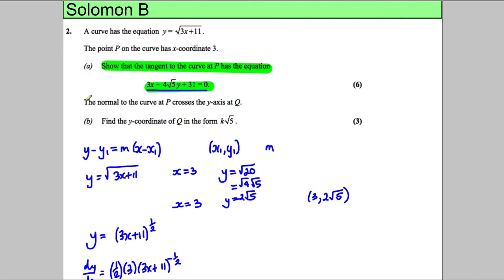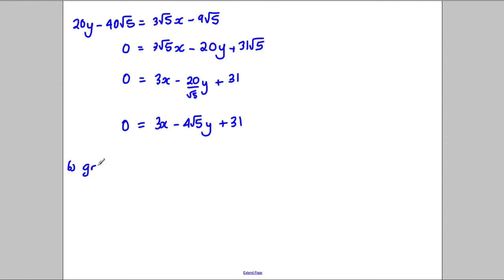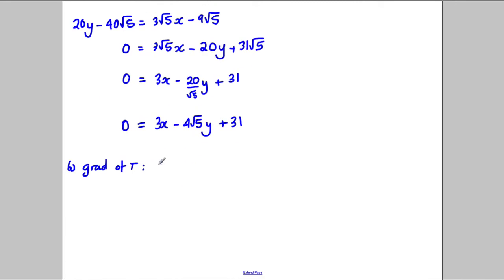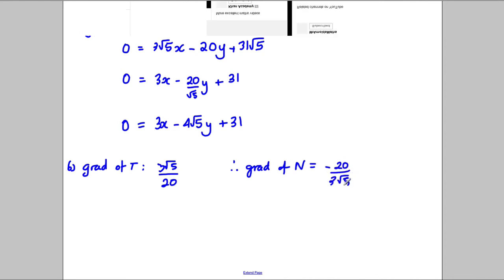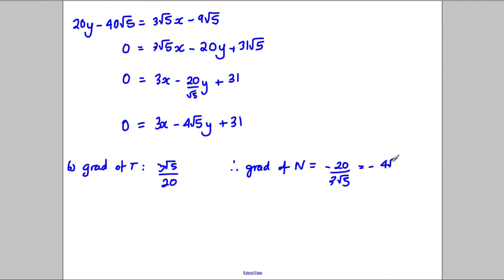So now it says, the normal to the curve at P crosses the y-axis at Q, find the y-coordinate in the form k root 5. So the normal to the curve at P, which is at the same point, crosses the y-axis at Q. So firstly, what we can state for the next part, we can state that for part B, the gradient of the tangent we had previously stated was 3√5 over 20, so therefore, the gradient of the normal is going to be the negative reciprocal, which would be negative 20 over 3√5, which we could rationalize, so just tap that in the calculator, so it would be negative 20 divided by 3√5, and that's negative 4√5 over 3, like that.